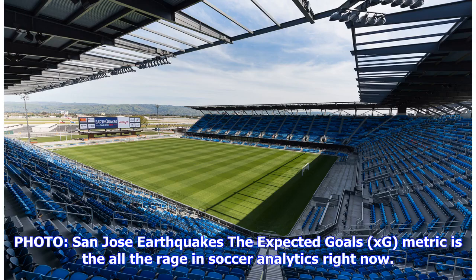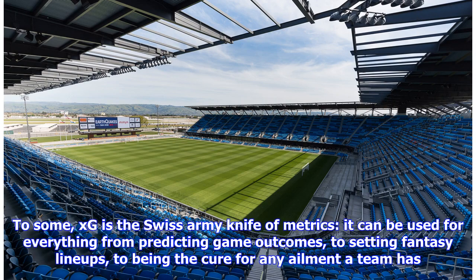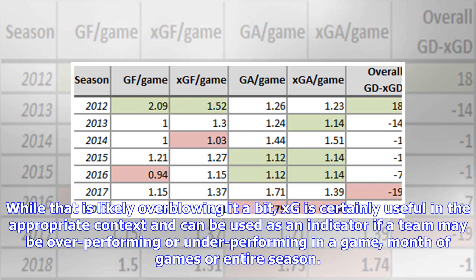The expected goals (xG) metric is all the rage in soccer analytics right now. To some, xG is the swiss army knife of metrics — it can be used for everything from predicting game outcomes to setting fantasy lineups to being the cure for any ailment a team has. All that is likely overblowing it a bit. xG is certainly useful in the appropriate context and can be used as an indicator if a team may be overperforming or underperforming in a game, month of games, or entire season.